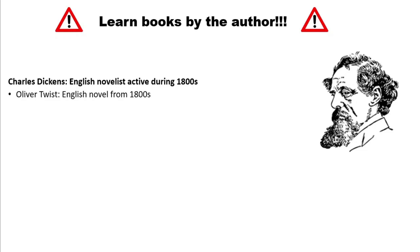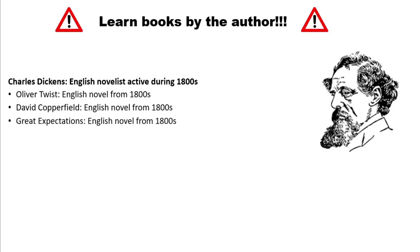Here's the thing about studying books by the author: if you know those facts about Charles Dickens, you can apply them to all of his works. If you remember that he wrote Oliver Twist, you know that Oliver Twist is an English novel from the 1800s. Same thing with David Copperfield and Great Expectations. This is much more effective than trying to memorize facts about individual books — you'd just mix them up. Just remember something about the author, remember all the major books he wrote, and then all those facts will be applicable to the books.